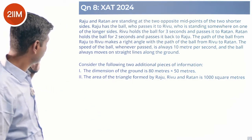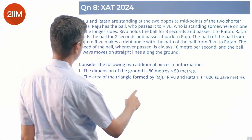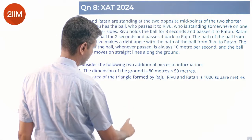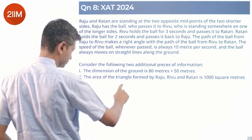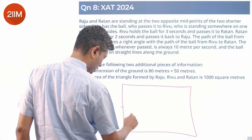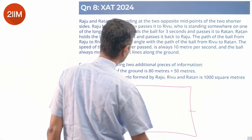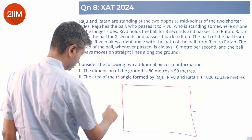Going over the setup again: Raju and Ratan are at the midpoints of the two opposite shorter sides. Drawing the rectangle — Raju here, Ratan here.